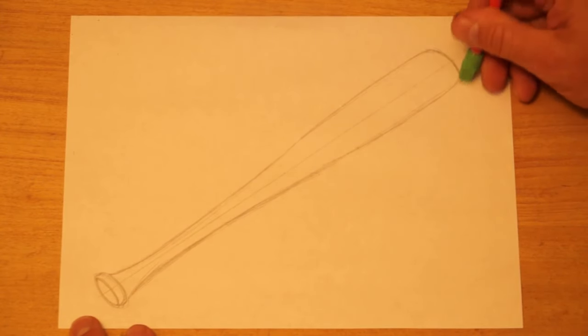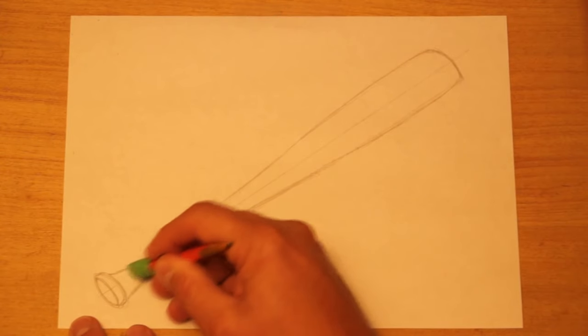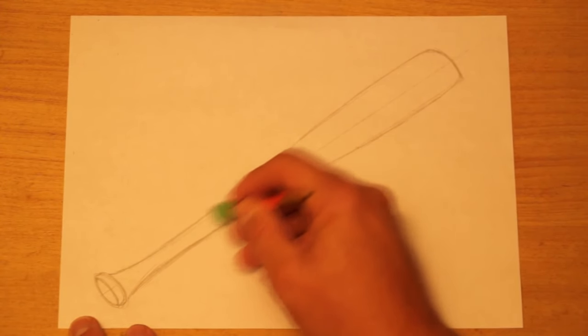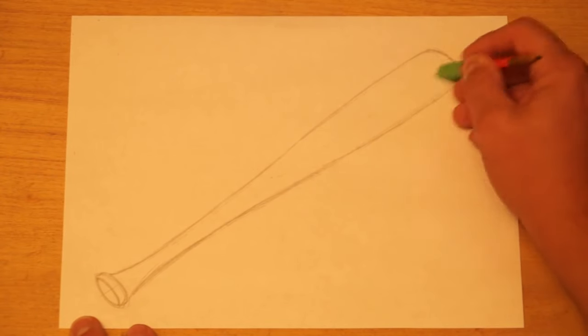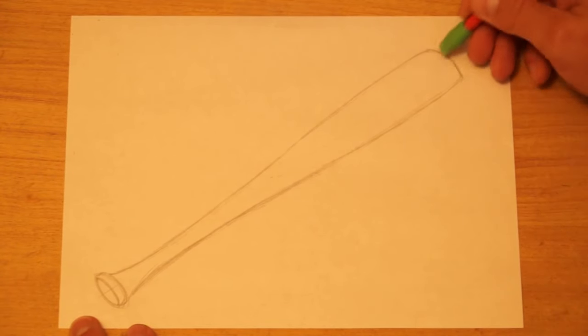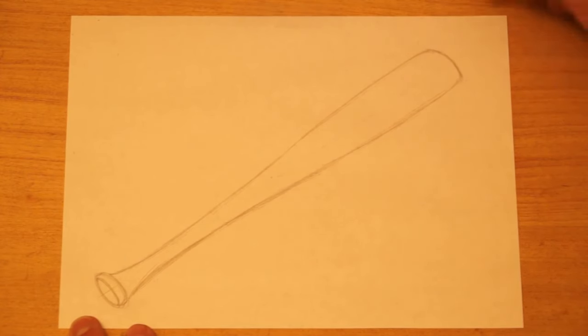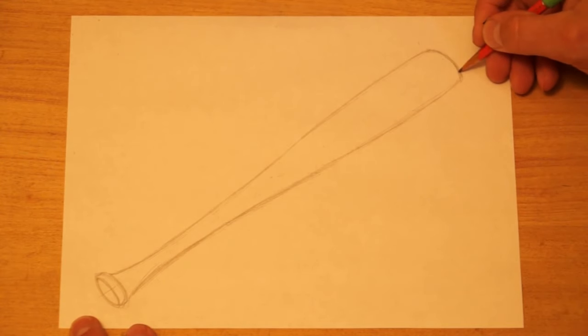Then I'm going to go back and clean up the center. I don't need this line anymore. And then I can add details. Now, what you add in details, you might find by studying your bat. It's good when you draw things to kind of look over what you're going to draw, to study it.